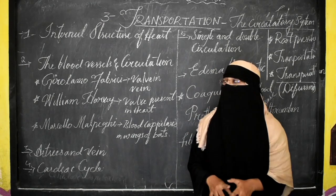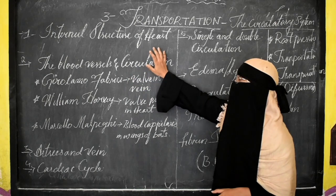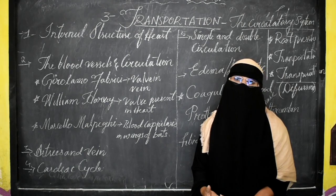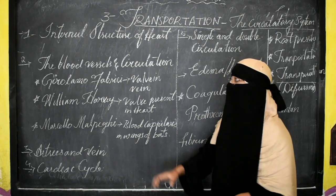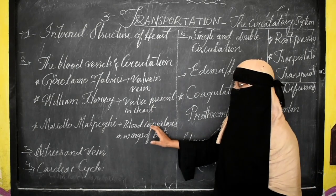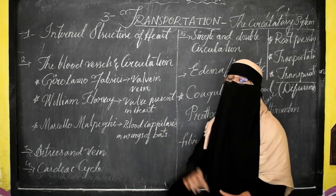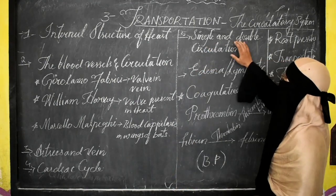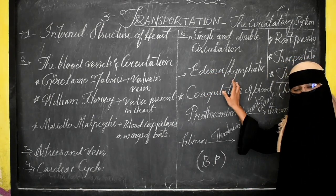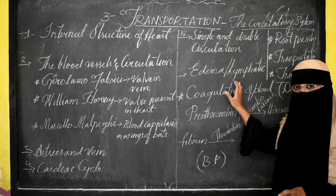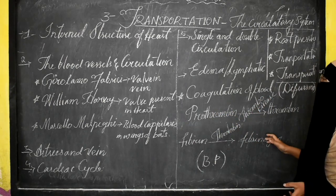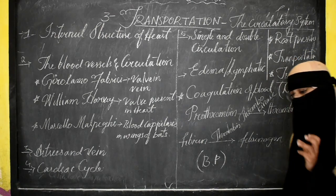You need to clearly learn the internal structure of the heart — many questions can be made from this for the examination. Next are blood vessels and circulation, and the work done by three scientists. Then arteries and veins, the cardiac cycle, single and double circulation, edema, the lymphatic system, and coagulation of blood. Also, root pressure — how circulation takes place within plants, since plants also absorb water through root hairs and transport it to the last leaf, and food produced in leaves is transported to all parts.